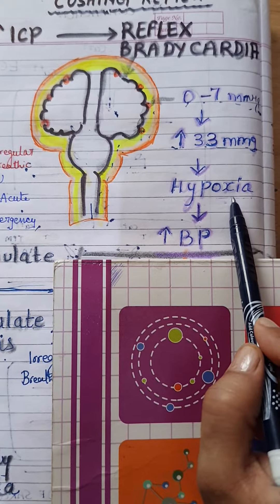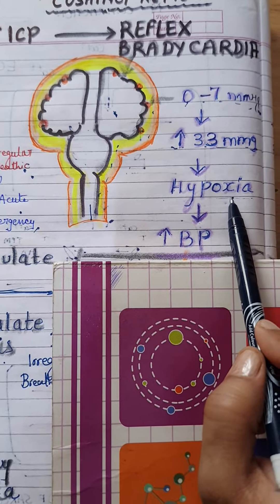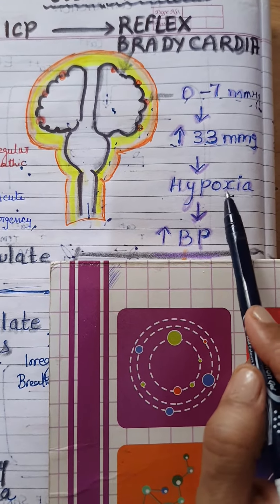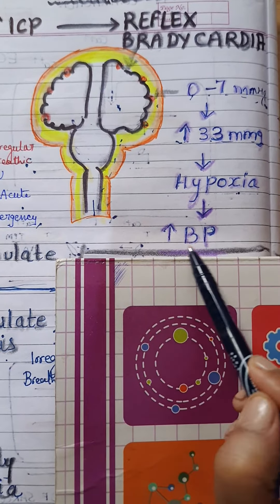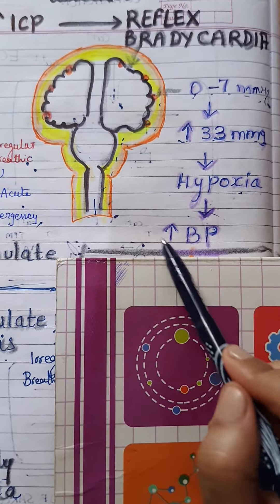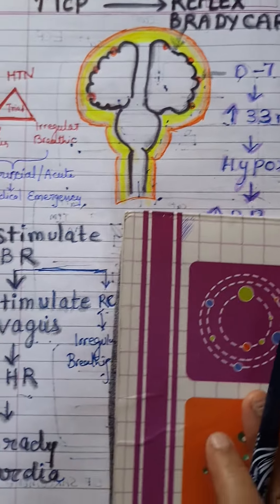And to all stressful conditions, in response to all stressful conditions, sympathetic system gets activated. And stimulation of sympathetic system causes raised BP or hypertension.